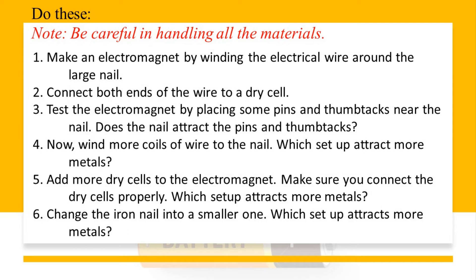Step 1: Make an electromagnet by winding the electrical wire around the large nail. Step 2: Connect both ends of the wire to a dry cell. Step 3: Test the electromagnet by placing some pins and thumbtacks near the nail. Does the nail attract the pins and thumbtacks? Step 4: Wind more coils of wire to the nail. Which setup attracts more metals? Step 5: Add more dry cells to the electromagnet. Make sure you connect the dry cells properly. Which setup attracts more metals? Step 6: Change the iron nail into a smaller one. Which setup attracts more metals?